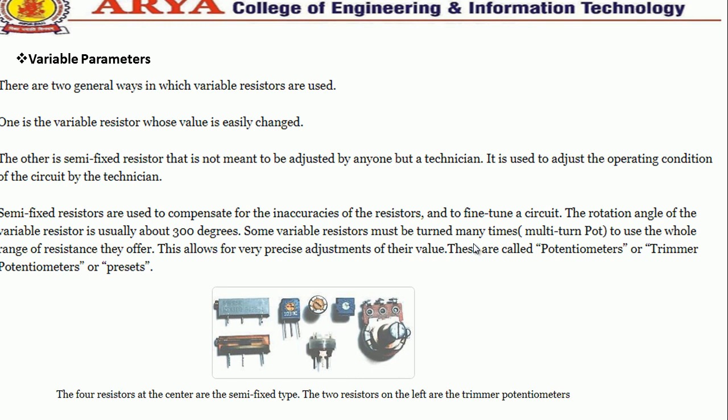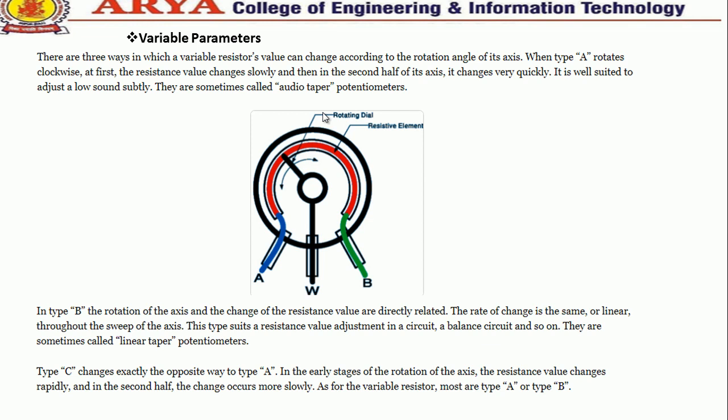These multi-turn types are called potentiometers or trimmers. The center resistors shown are the semi-fixed type, the two on the left are trimmer potentiometers, and the other is the standard type of variable resistor. There are three ways in which a variable resistor value can be changed according to its rotation angle.